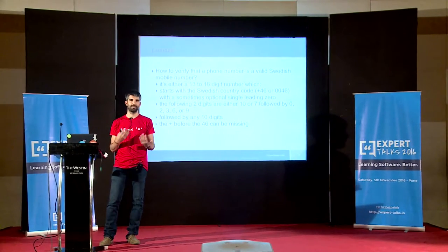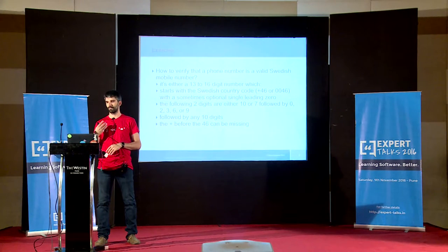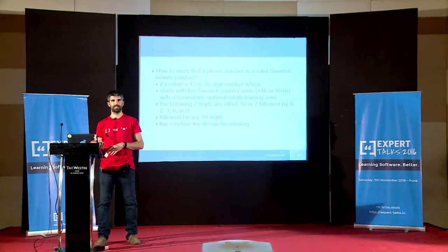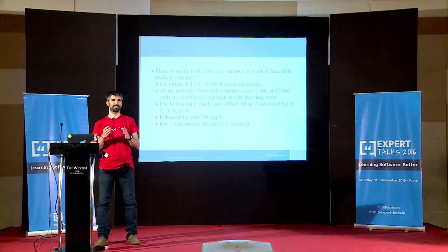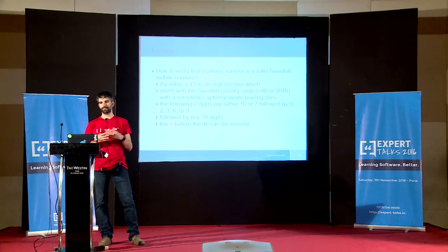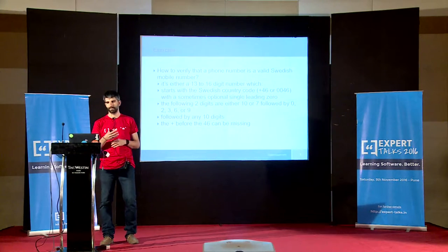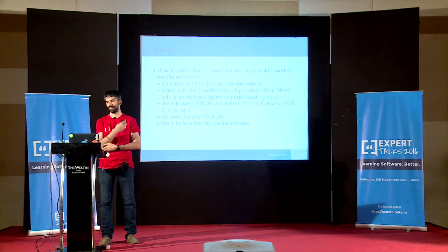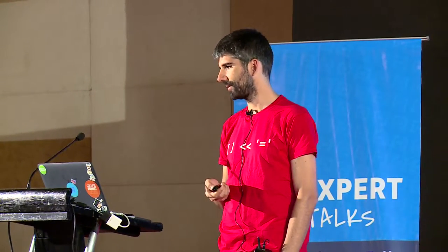If you look at the description on the internet of how a Swedish phone number should be, it says it's between 13 and 16 digits. It might start with +46 or 0046. Sometimes there's just a leading zero, meaning nobody put a country code. Then it's followed by two digits — 10 or 10 — then a 7, followed by 0, 2, 3, 6, and 9, then 10 digits, and the plus is optional.